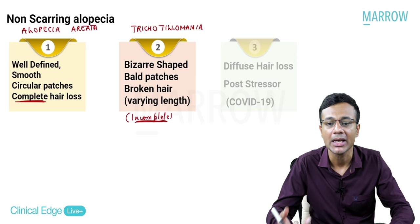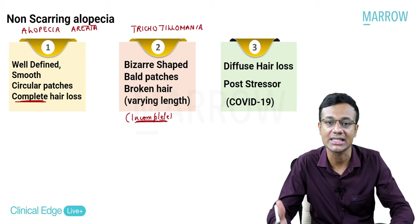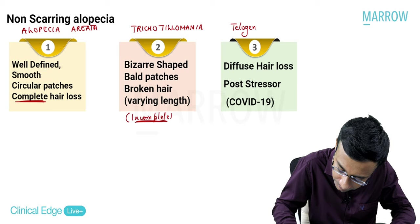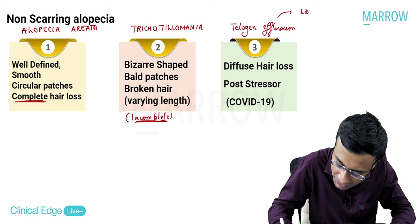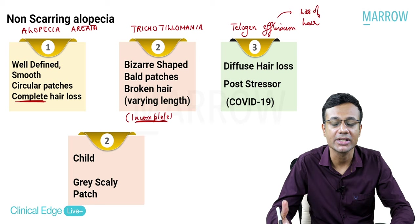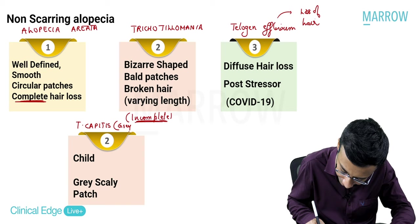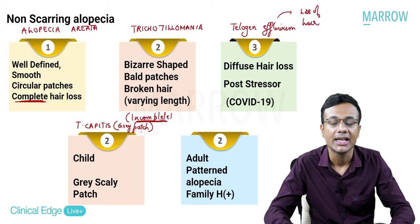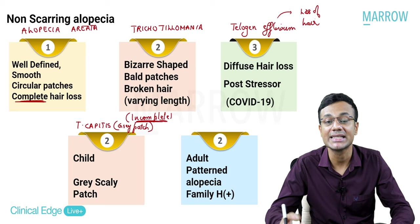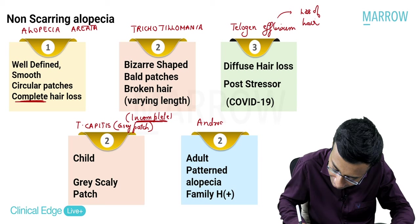Third, diffuse hair loss after a significant systemic stress - COVID-19, malaria, typhoid, or pregnancy - is telogen effluvium; effluvium means loss of hair. Fourth, a child presenting with a gray color scaly patch on the scalp - diagnosis is tinea capitis gray patch type. Fifth, an adult with non-scarring pattern alopecia with a genetic factor - diagnosis is androgenetic alopecia.